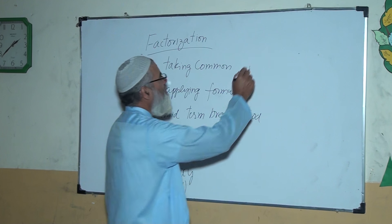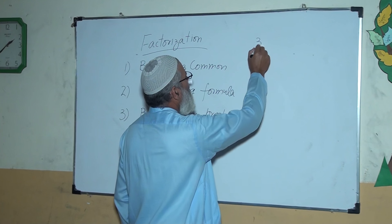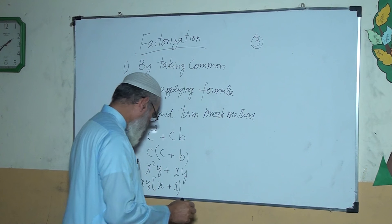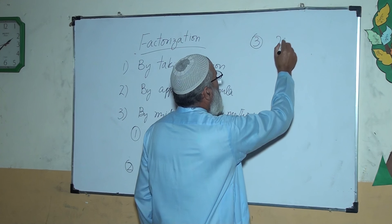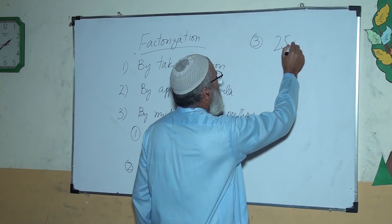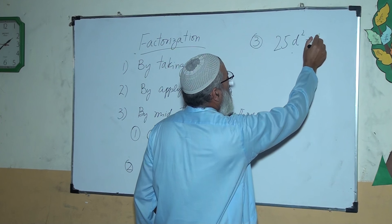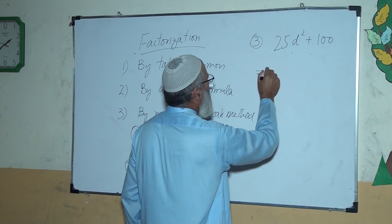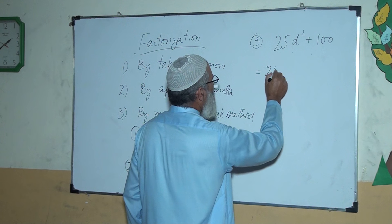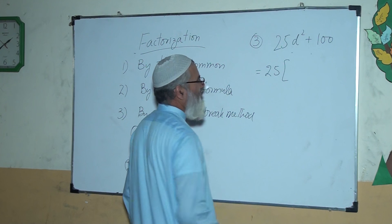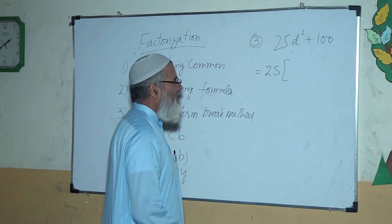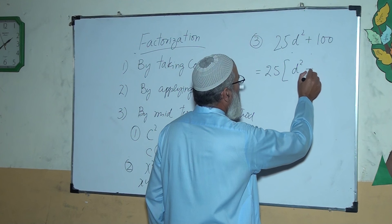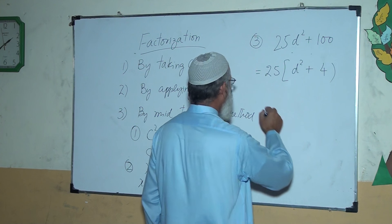Question three: 25d squared plus 100. 25 is common in this question, so there will be 25(d squared plus four).